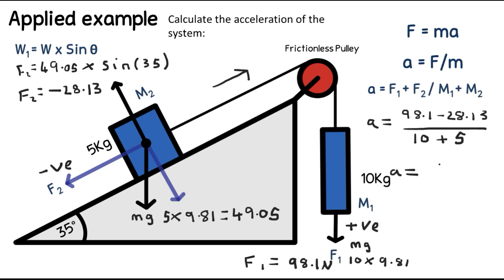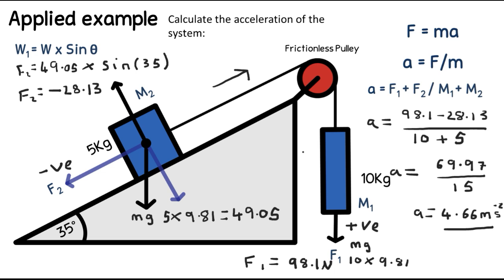So the acceleration equals 69.97 divided by 15, which comes out as 4.66 meters per second squared, since we've been using Newtons and kilograms. To summarize the method: decide the direction of acceleration, calculate both forces, find the resultant force remembering direction signs, sum the total mass, and use a = F/m. Thanks for watching — if you have any questions about the example, just ask in the comments below.